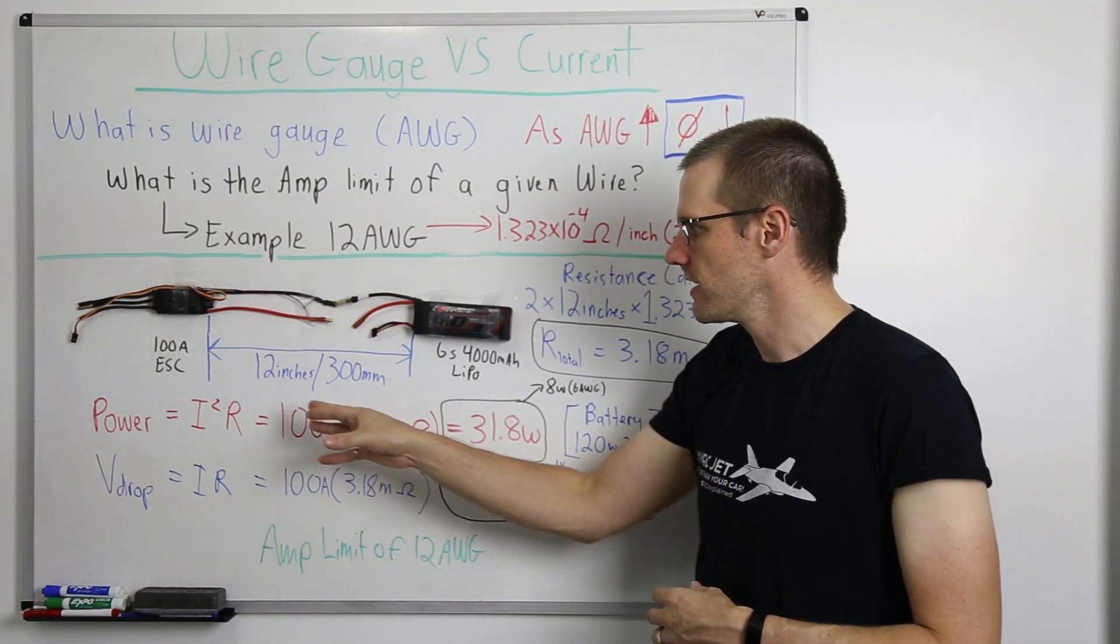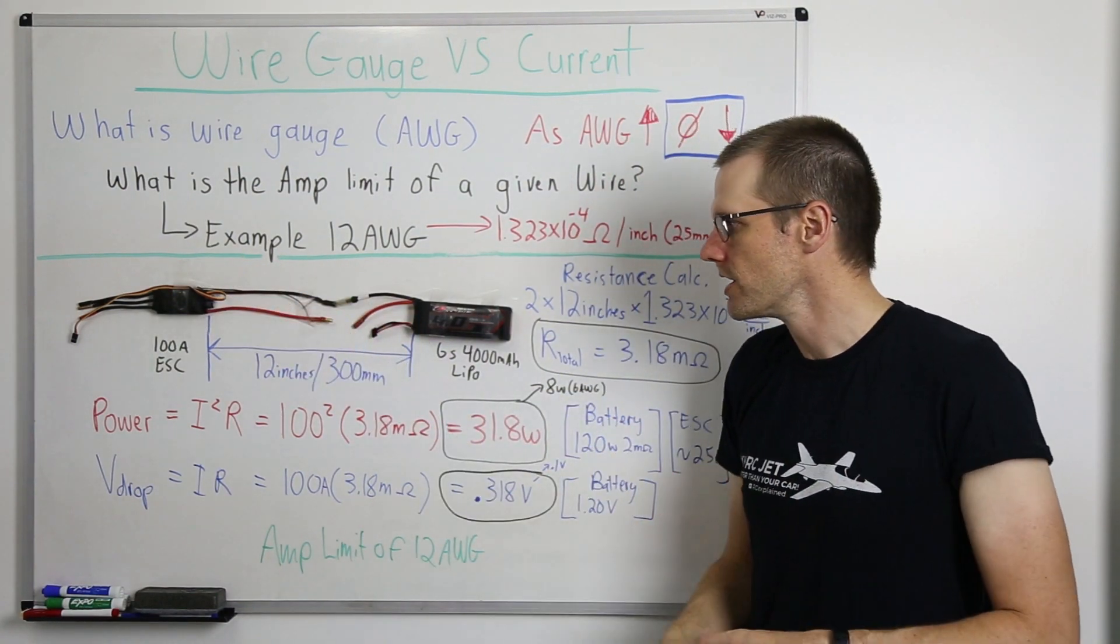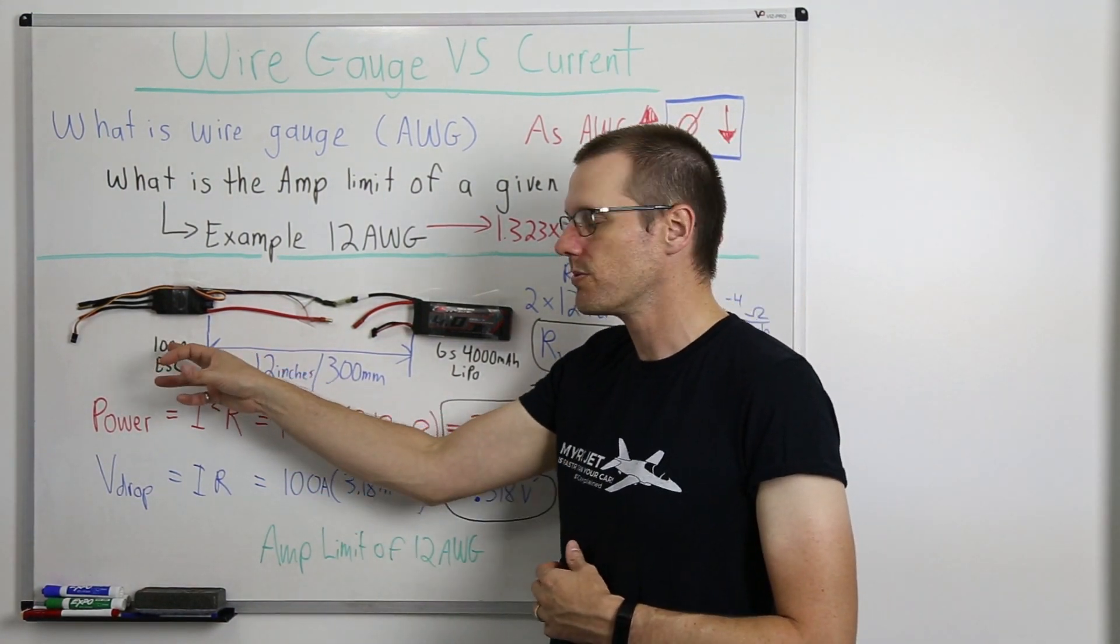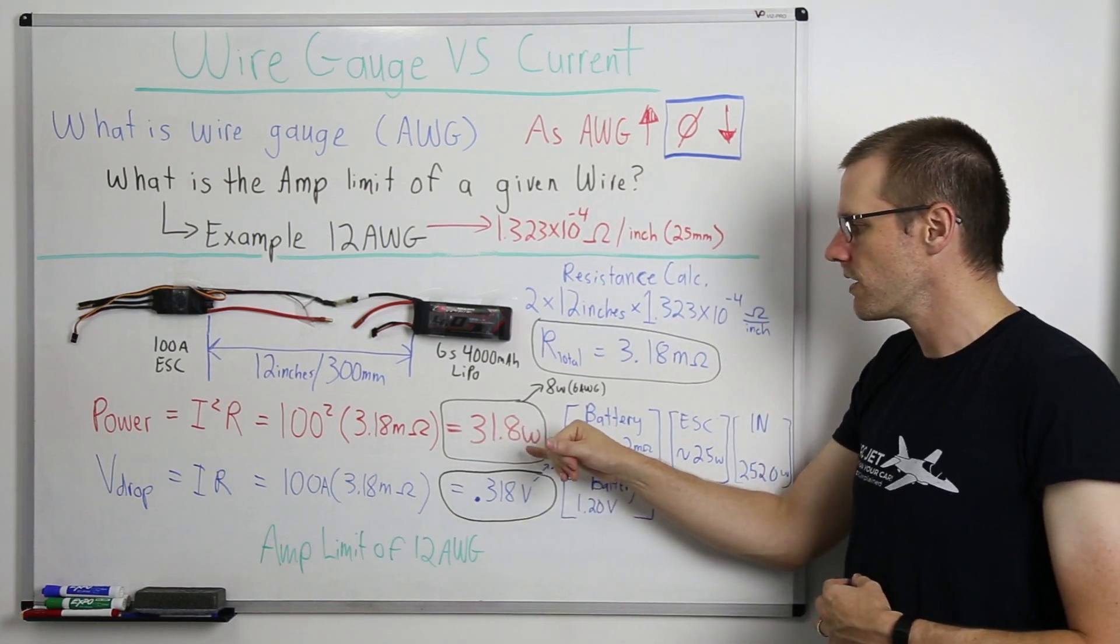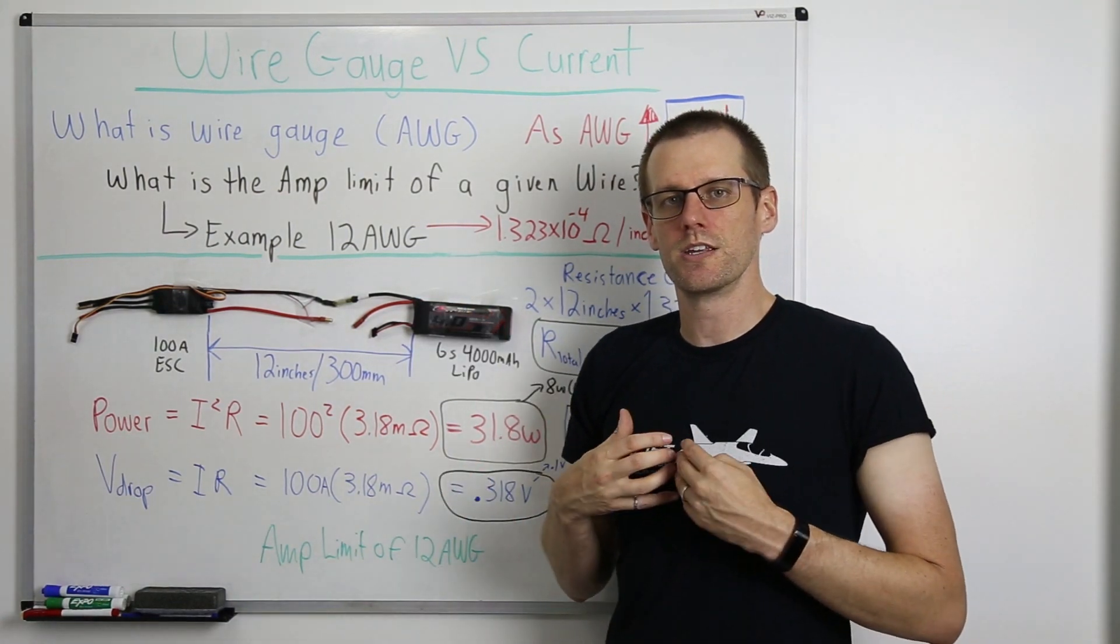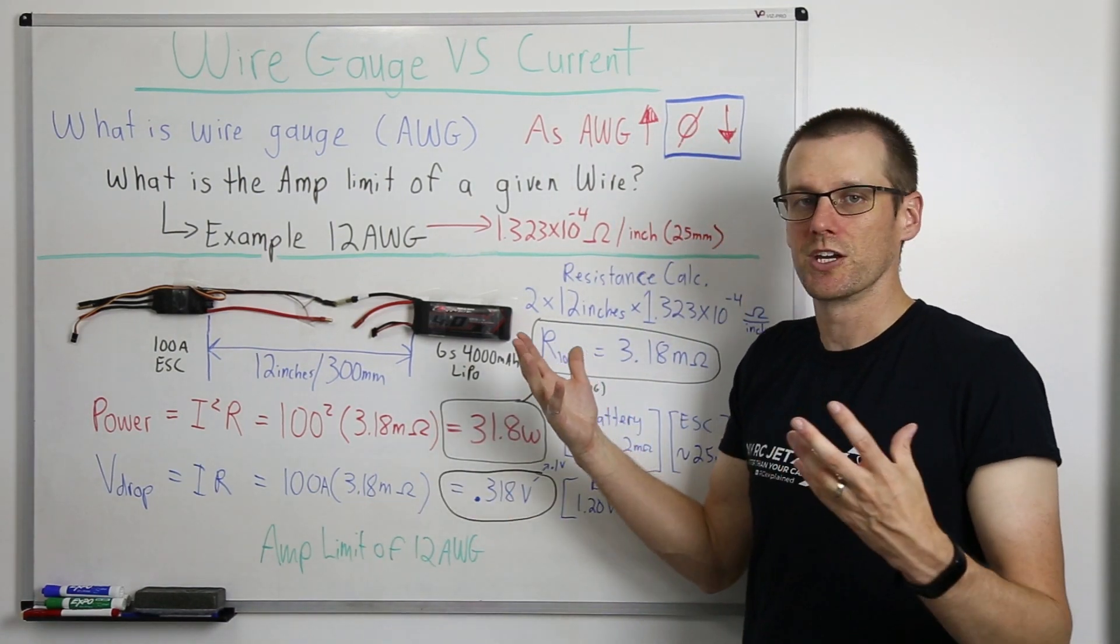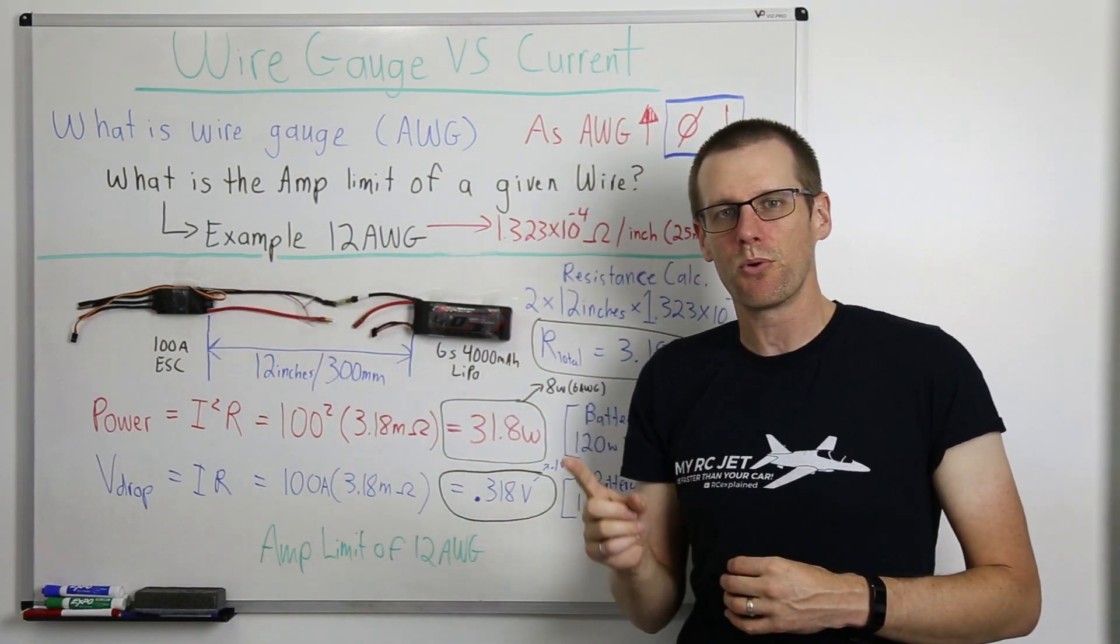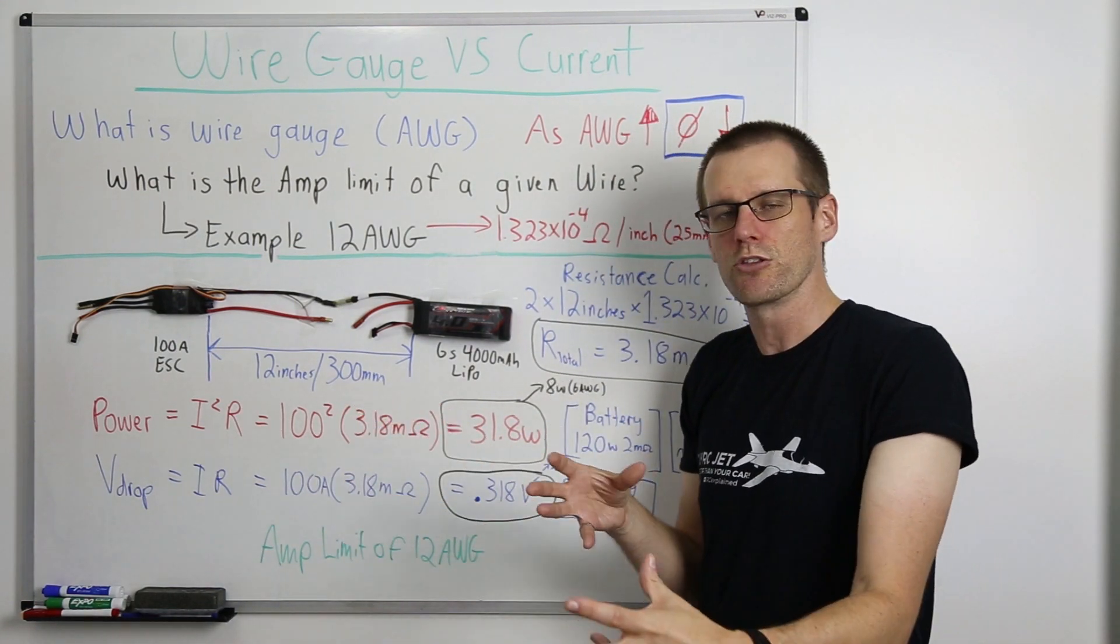So now we're going to go and jump into our first calculation and look at exactly what happens to power. So the formula to determine power and we're looking at what kind of power losses do we get out of these wires is going to be the current squared multiplied by the resistance. Here we get the current of 100 amps that we talked about in our example with this 100 amp speed control. We square that, we multiply it by 3.18 times 10 to the negative 3, and we get 31.8 watts of power being wasted essentially from those wires. Those wires really ultimately need to go and get rid of those 30 watts so that it does not overheat. If it can't get rid of those 30 watts, it'll increase in temperature until something could possibly burn up.